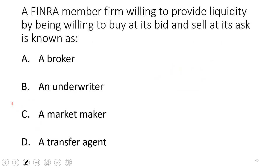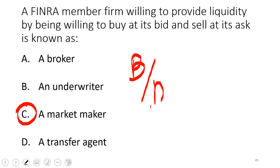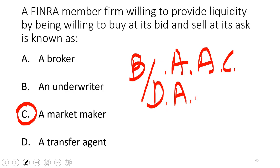A FINRA member firm willing to provide liquidity by buying at its bid and selling at its ask is called a market maker. All broker-dealers are called broker-dealers, but in any one transaction they act either as an agent (charging a commission) or as a dealer/principal (trading for a profit). They won't be both in any one trade.